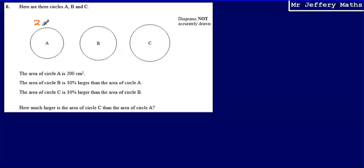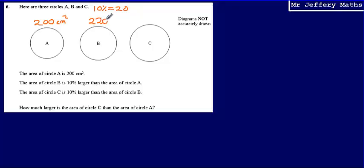We're starting off with an area of 200 centimetres squared for circle A. We're told that the area of circle B is 10% larger than the area of circle A. 10% of 200 would be 20, so the area of circle B is going to be 220 centimetres squared. We add on that 10%, which is 20, to give us the area for circle B.